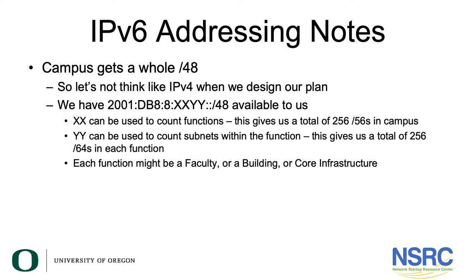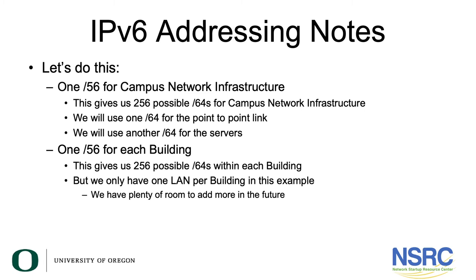Remember the prefix allocated was 2001:DB8:8:: and we're going to use the template 2001:DB8:8:XXYY::/48 for assigning IP addresses. XX can be used to count functions, giving us a total of 256 /56s in the campus. YY is used to count subnets within each function, giving another 256 /64s per function. Each function might be a faculty, a building, or core infrastructure. We'll allocate one /56 for campus network infrastructure, giving us 256 possible /64s.